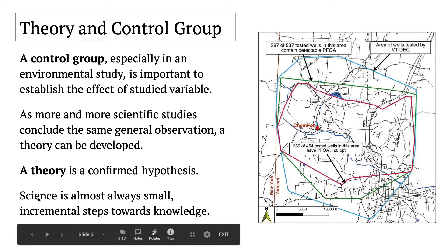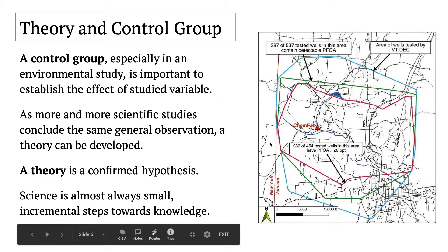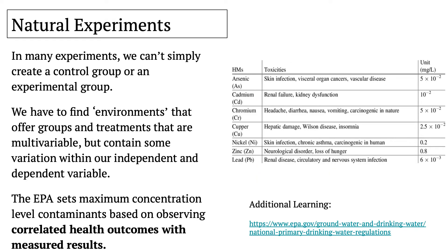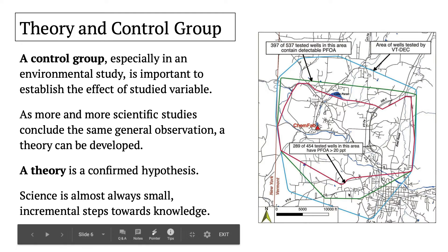We have to know that science is a really small, incremental step in forming new knowledge. This might be one out of dozens of studies throughout America looking at this problem, and it might take decades to actually establish the relationship between ChemFab contamination and water quality. Natural experiments are really important for our environmental science class because we can't simply create a control group or even an experimental group. We can't ethically spike people's wells with PFOAs to see what is a healthy level and what are the health effects. We have to find environments that already pre-exist and offer groups and treatments that contain some variation within our independent and dependent variables — such as proximity to the ChemFab lab, well type, and well depth.